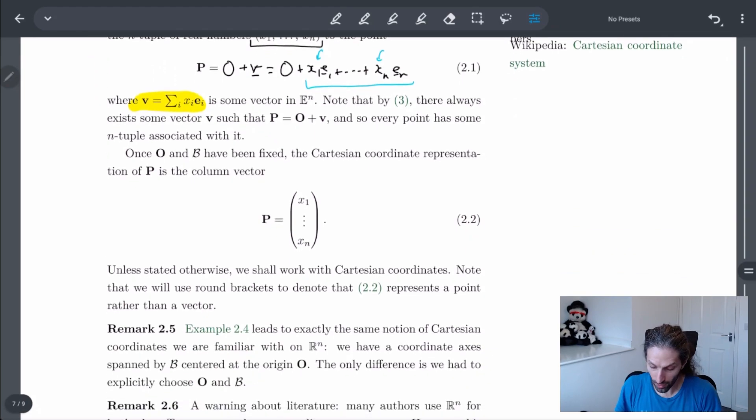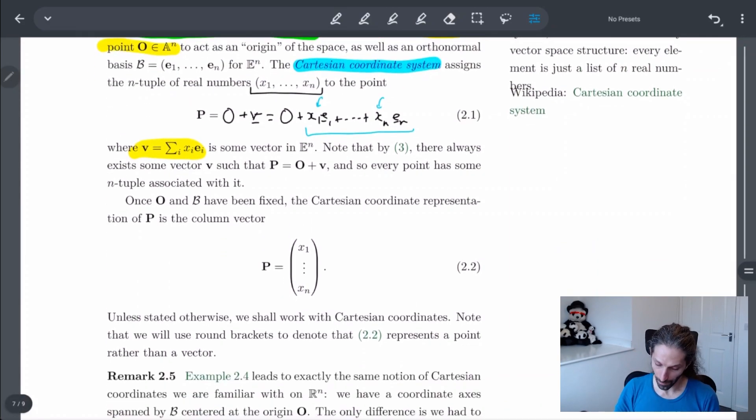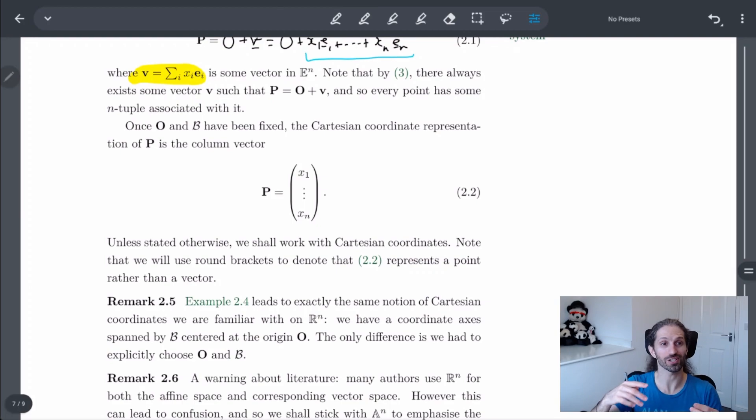So in other words, once O is fixed—or I guess O here, not zero, it's a big O for origin—and B being our orthonormal basis, then at that point once we have these two things, this is important.